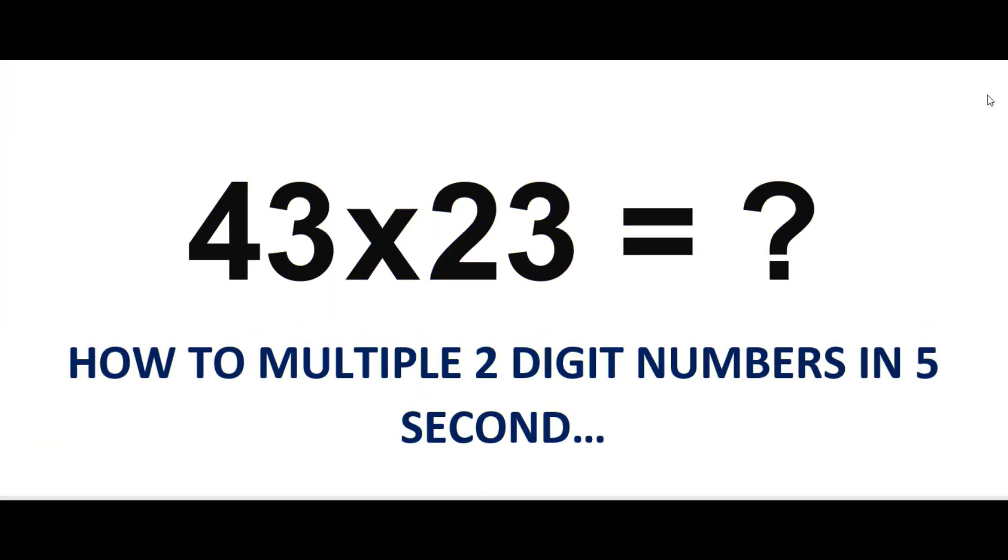Let us begin with the numbers 43 times 23 and then we will go on to more random two-digit numbers to give you more ideas and know how to solve this complex but simple mathematical technique.